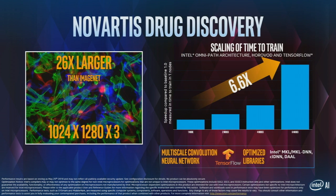For training, our engineers worked closely with Novartis, our partner, and they had a very challenging problem. They had to analyze extremely large images — way larger than the data sets we are used to. Xeon turned out to be a great solution because of its large memory capacity. Taking advantage of Intel-optimized TensorFlow and scaling it up to eight nodes, we were able to reduce the training time from hours to only minutes.